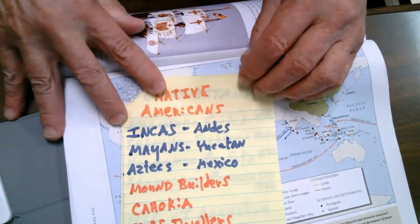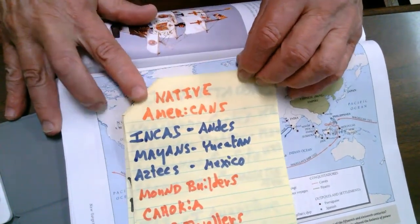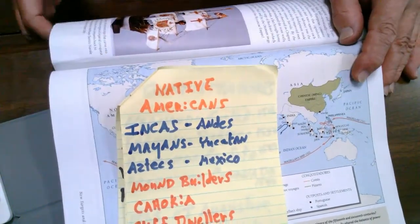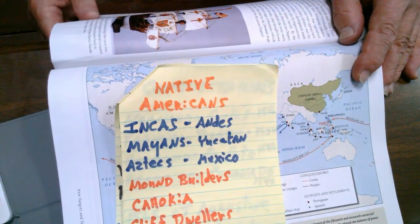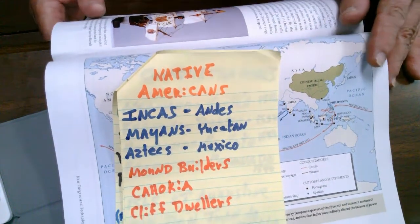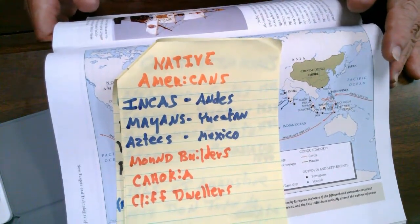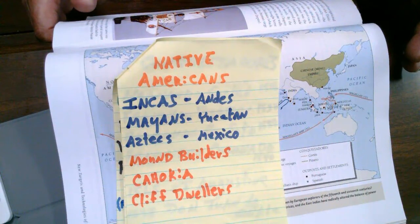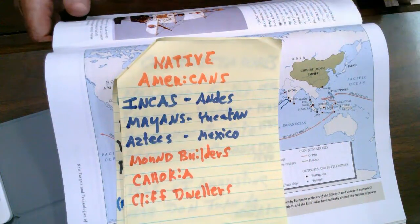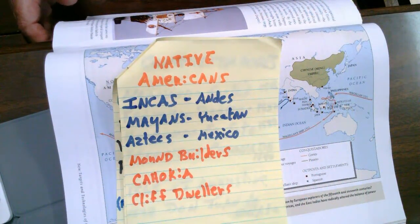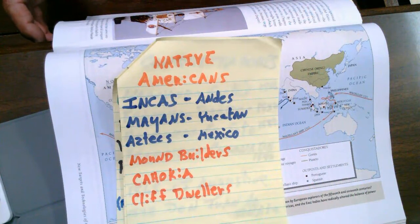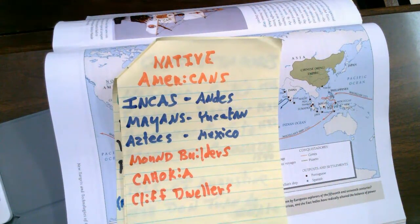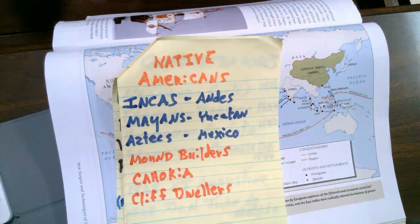Now let's move on to Native Americans — also called Indigenous Americans. Some of the larger groups were the Incas, the Mayans, and the Aztecs. Let's spend a few seconds talking about those groups.